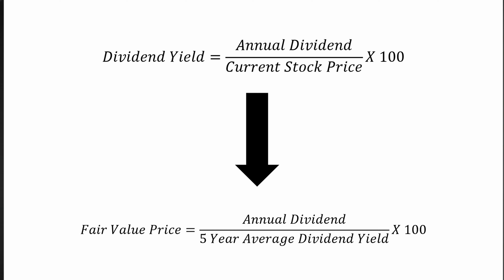Let me explain why. By rearranging the previous formula, we can calculate the fair value price of a stock, which is the annual dividend divided by the five-year average dividend yield, multiplied by 100.